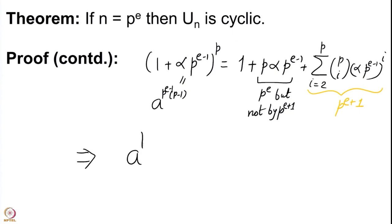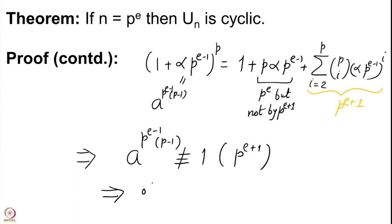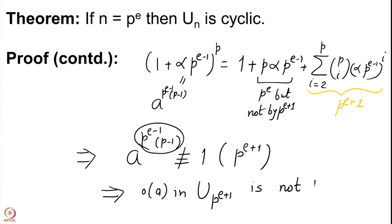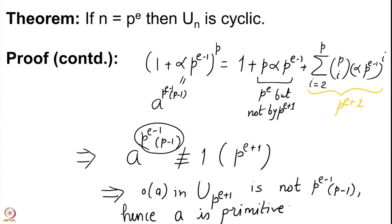Moreover, on the left-hand side we have a^(p^(e-1)·(p-1)), and what we have is that this quantity is divisible by p^e but not by p^(e+1). So it tells us that a^(p^(e-1)·(p-1)) is not congruent to 1 modulo p^(e+1), which is to say that the order of a in U(p^(e+1)) is not p^(e-1)·(p-1). Hence a is primitive in U(p^(e+1)). This completes our long proof which has been going on over several last lectures.